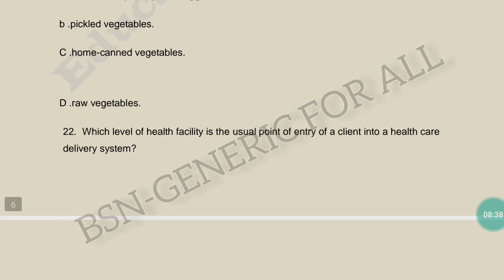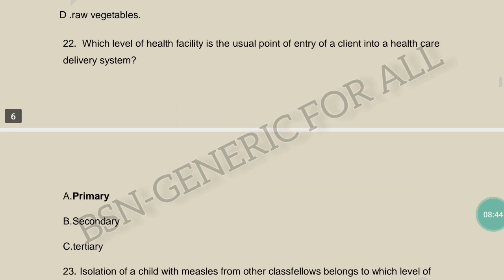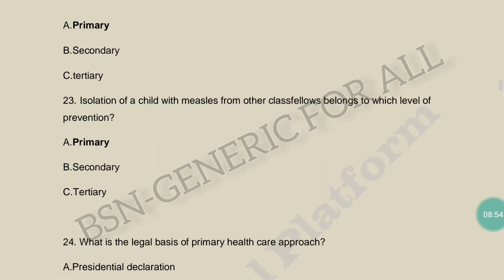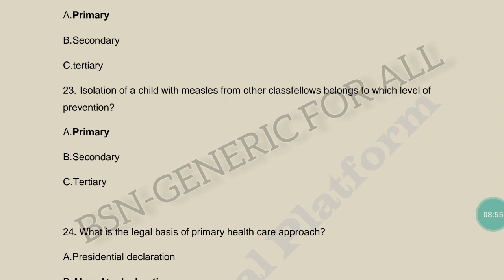Which level of health facility is the usual point of entry of a client into a healthcare delivery system? The answer is primary healthcare facility — the client's first contact with the healthcare delivery system is at the primary level.